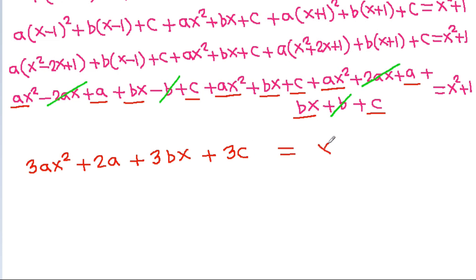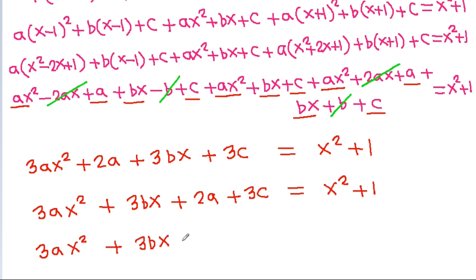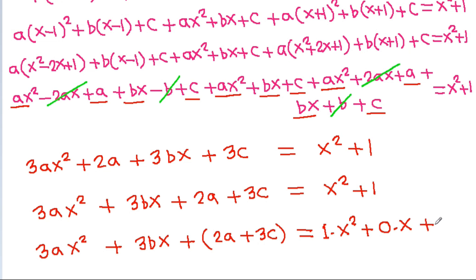It is equal to x² plus 1. And it is 3ax² plus 3bx plus 2a plus 3c is equal to x² plus 1. That is 3ax² plus 3bx plus 2a plus 3c is equal to 1 times x² plus 0 times x plus 1.